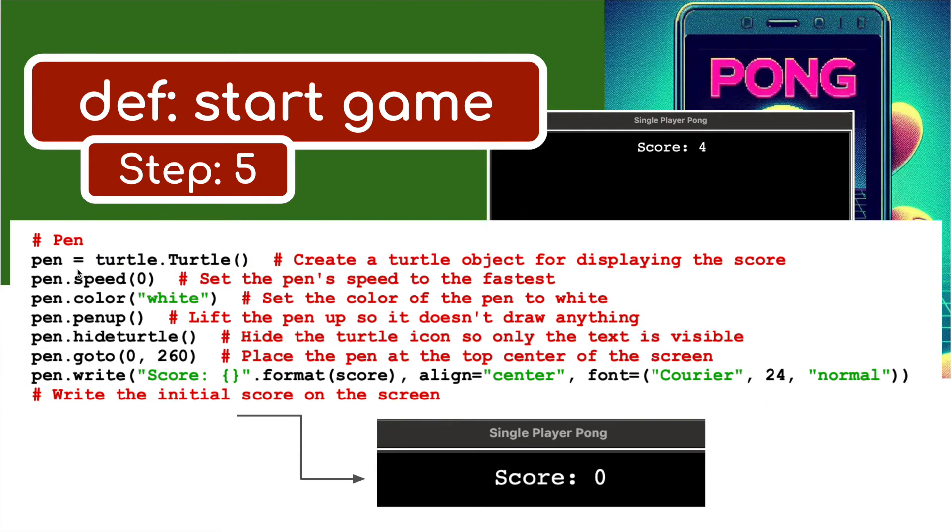Step five - we're going to use the pen to write this score out. Pen speed is zero - so pen speed is fastest. Pen color is white. Pen up. Hide the turtle. Pen goes to the top plus 260 in the y axis, zero in the x axis - place the pen to the top center of the screen. Then write the variable score. Align at center. Font courier, size 24, normal. This will write the score at the top of the screen.